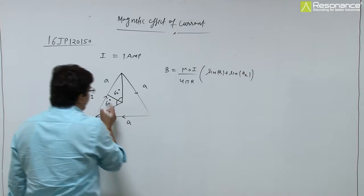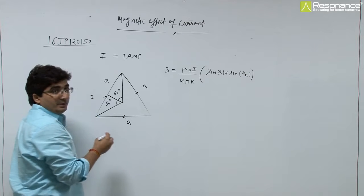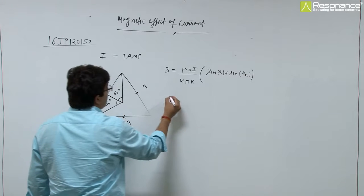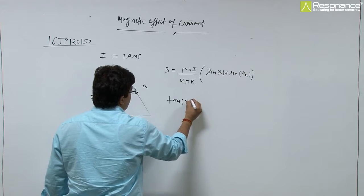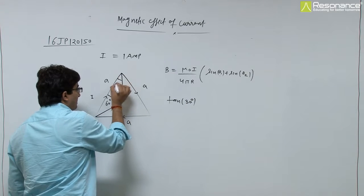Here r is the distance from the center to a side. It can be calculated using triangle geometry. This angle is 30 degrees.